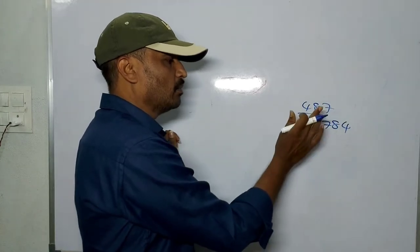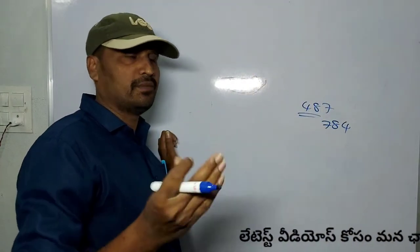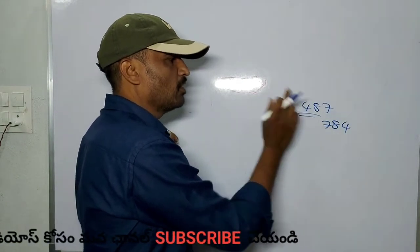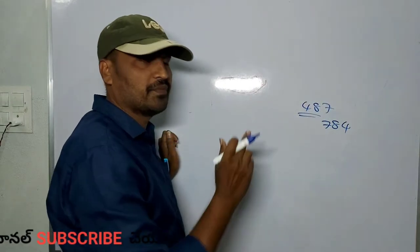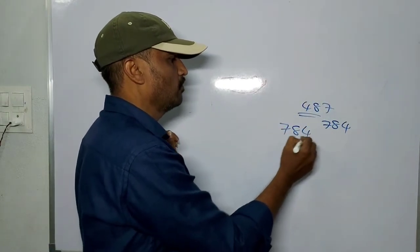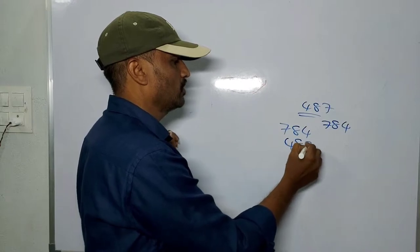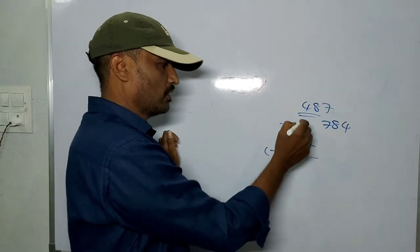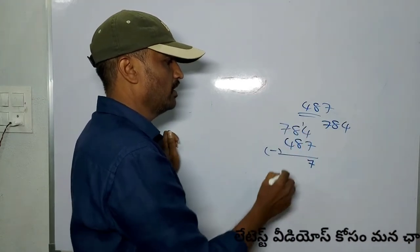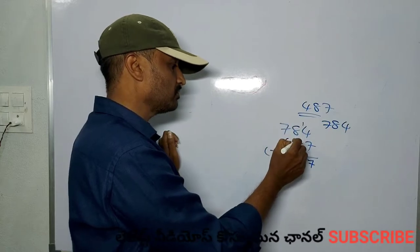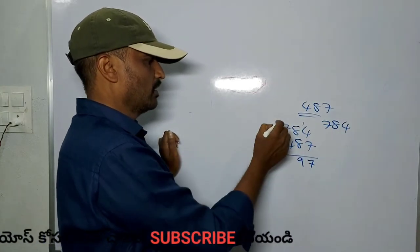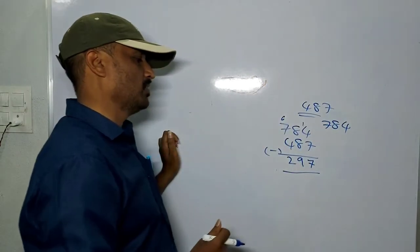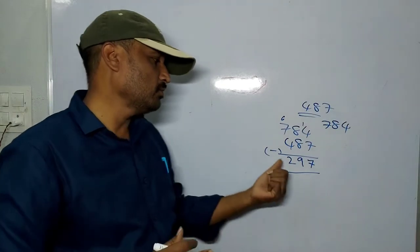Using 784, subtract the smaller reversed number 487. Here: 14 minus 7 is 7, 17 minus 8 is 9, 6 minus 4 is 2. So the answer is 297.